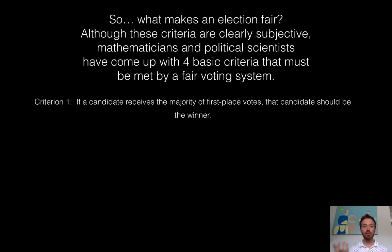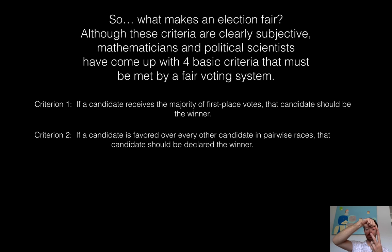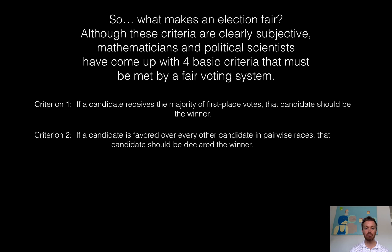The first criterion: if a candidate gets the majority — over 50% of the votes — that candidate should be the winner. Second, suppose you have four candidates A, B, C, and D. If you start doing pairwise races and person A beats B, A beats C, and A beats D — they win all the pairwise races — then it would be fair for candidate A to have won the election.